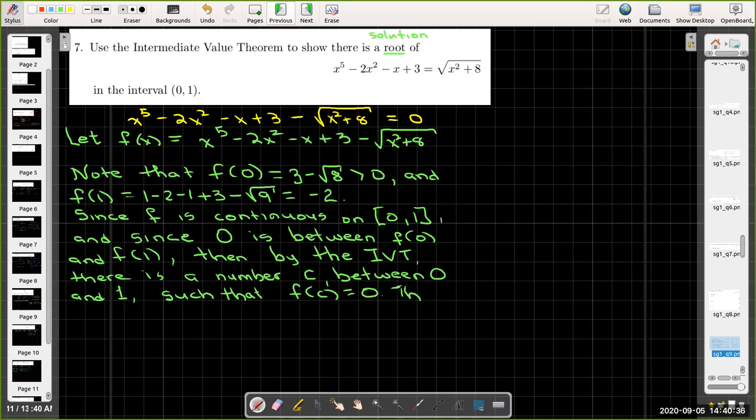f(c) equals 0. That is, c to the power of 5 minus 2c squared minus c plus 3 equals radical c squared plus 8.